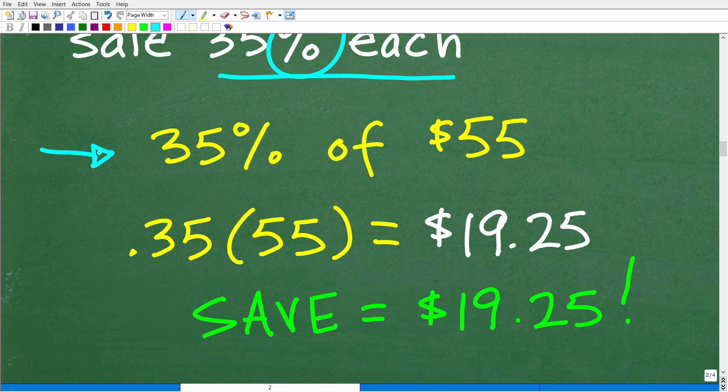How do we find a percent of a number? Well, remember the way we find a percent of a number is to take that percent and divide it by 100, which effectively is the same thing as moving the decimal point over two places to the left.